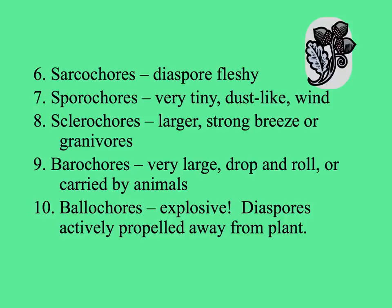Then there are those fruits or seeds that have a fleshy part — the sarcocores — that attracts animals to eat it, and then they drop the seeds in good places. Sporocores are really tiny and dust-like, the kind of seeds you find in orchids; the spores of ferns are also sporocores. Sclerocores are larger — maybe they need a strong breeze to move them; a poppy seed might be a sclerocore. Barocores are really big, like a coconut — they can drop and roll, or maybe be carried by animals or even water.